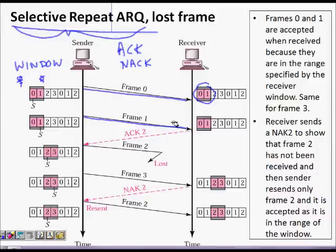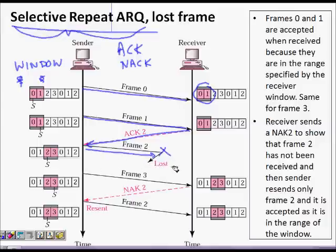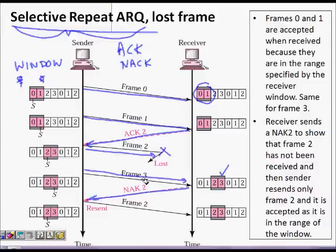The sender sends frame 2, but it gets lost. A timer has been started. Then frame 3 is sent. The receiver gets frame 3 and knows it has not received frame 2, so it sends NACK 2 — meaning 'I have not received frame 2.' The sender now knows this and retransmits frame 2. The receiver then has both frames.